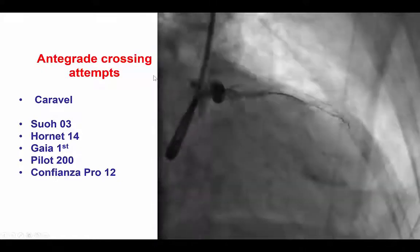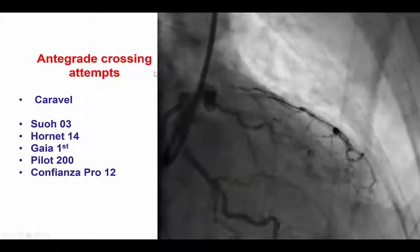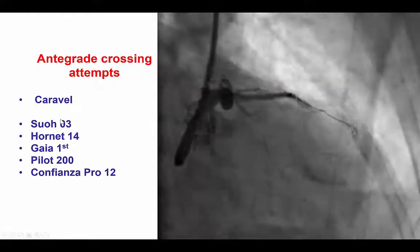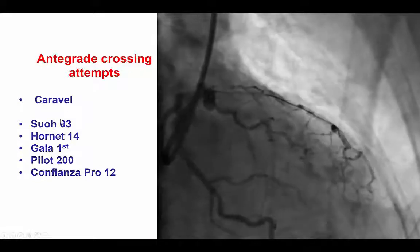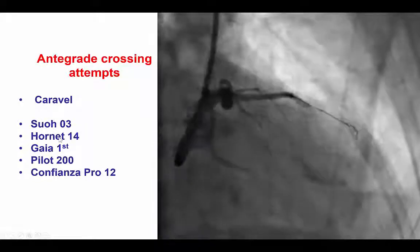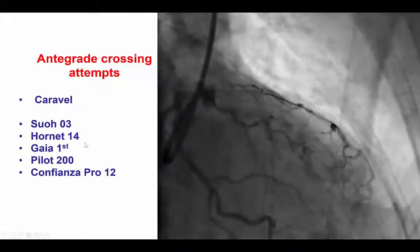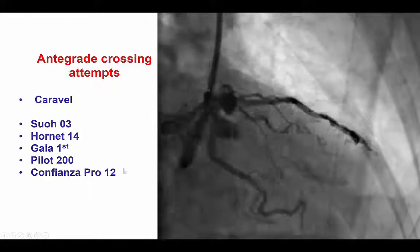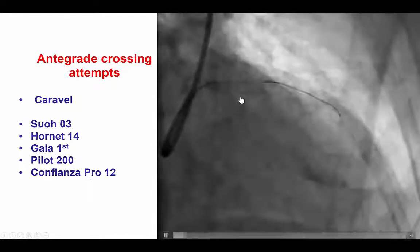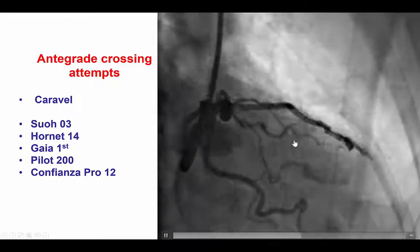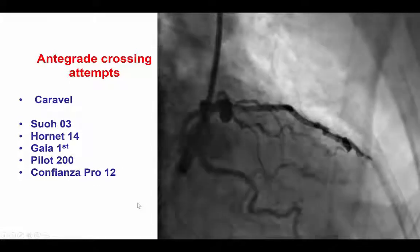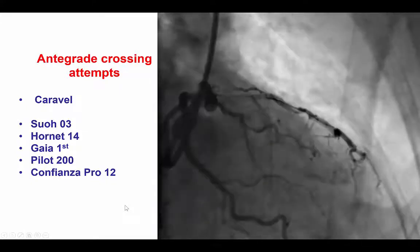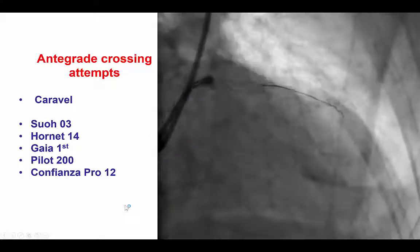We tried multiple antegrade crossing attempts using several guidewires including the Hornet 14, Gaia 1st, Pilot 200, and Confianza Pro 12, trying to puncture into where we knew was the proximal cap, but we were unfortunately not successful.